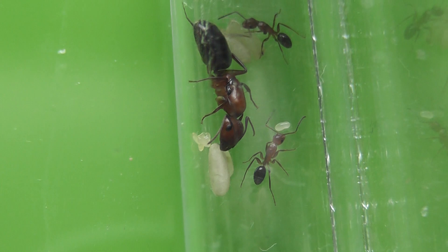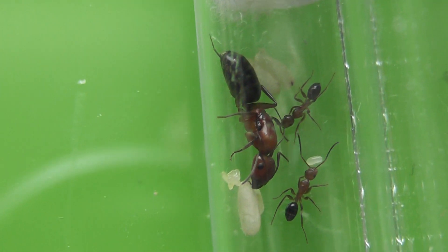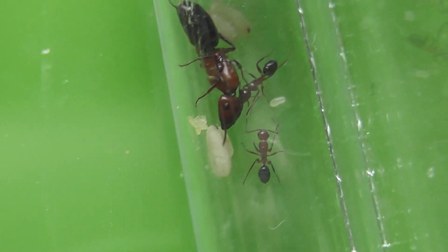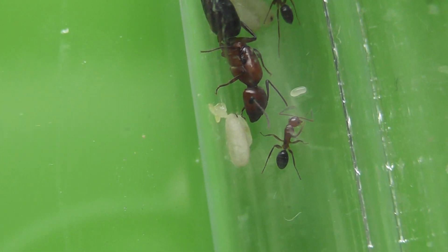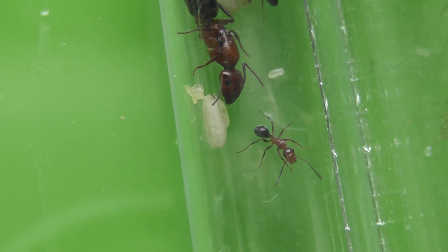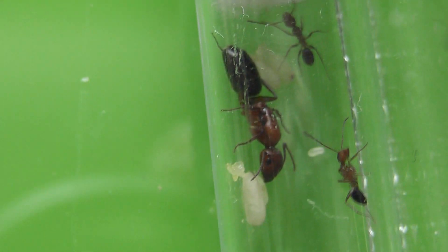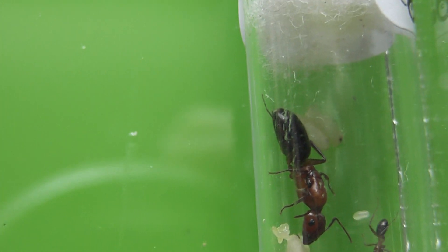The Camponotus seii colony has arrived. I was hoping we might get more workers - there's only two workers in there. However, there are some eggs and a larva and several cocoon pupae, I think four from what I could see.